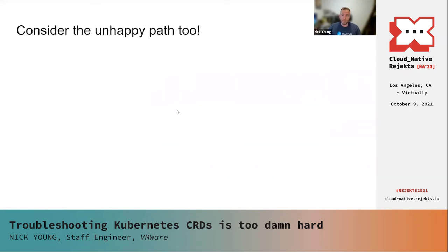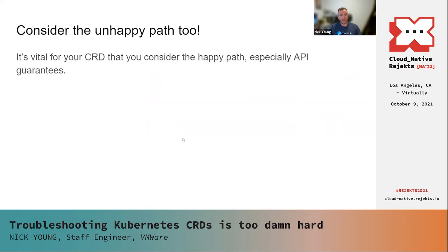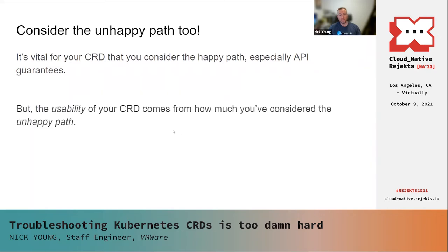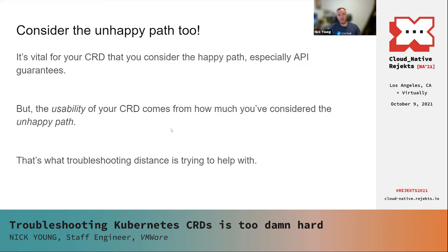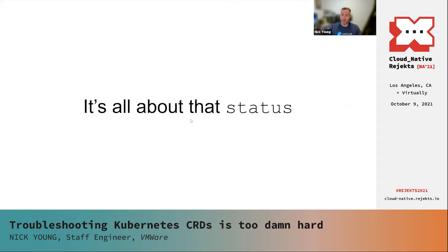When you're designing your CRDs you need to consider the unhappy path too. It's vital that you consider the happy path — especially around API guarantees and making sure things work and you don't break people as you add new features. But the usability of your CRDs comes from how much you've considered the unhappy path, and that comes back to the troubleshooting distance. For something like Ingress the troubleshooting distance can effectively be unbounded, because no matter how many kubectl commands you run you may not be able to get the information you need. So: how can we do better? It's all about the status.